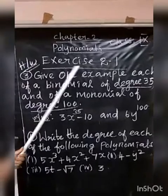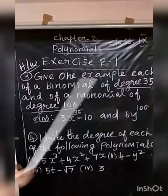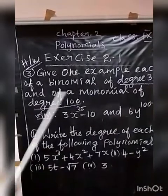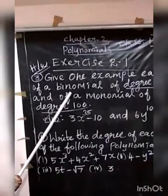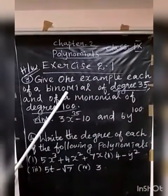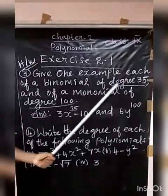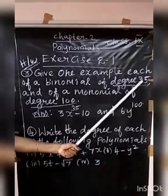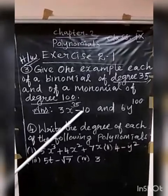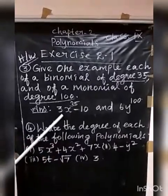Next, Exercise 2.1, Question 3: Give one example each of a binomial of degree 35 and a monomial of degree 100. A binomial has 2 terms. For a binomial of degree 35, an example is 3X Power 35 Minus 10 — it has 2 terms and the degree is 35.